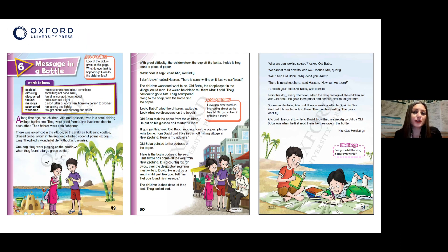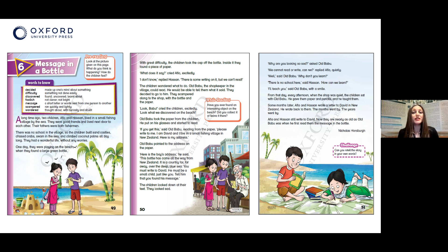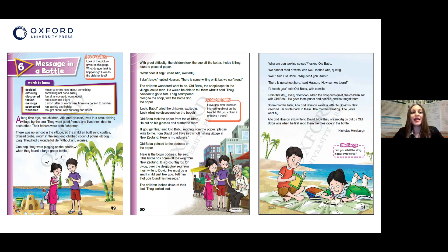If we look at the story from New Oxford Modern English, it's called 'Message in a Bottle'. There's a word bank you might want to contextualize for students before they actually read the story, so they're already familiar with the target vocabulary. It talks about Afiya and Hassan, two children who go to the beach — they're good friends hanging out at the beach, they live next door to each other and are neighbors. One day they were playing on the beach when they found a large green bottle. So here we've introduced a plot — this is the beginning of the crisis.